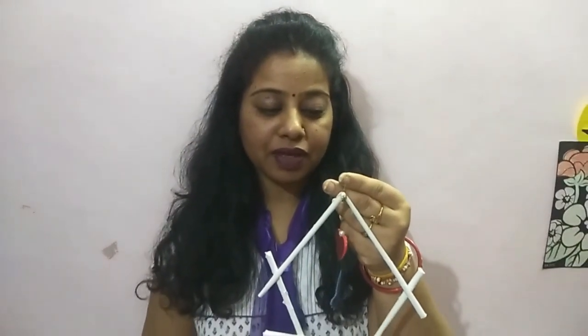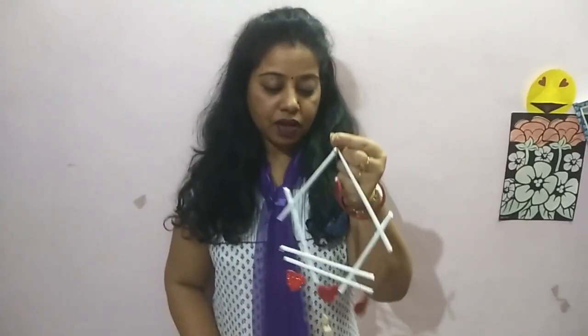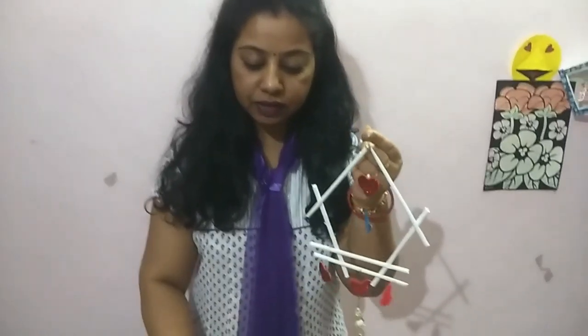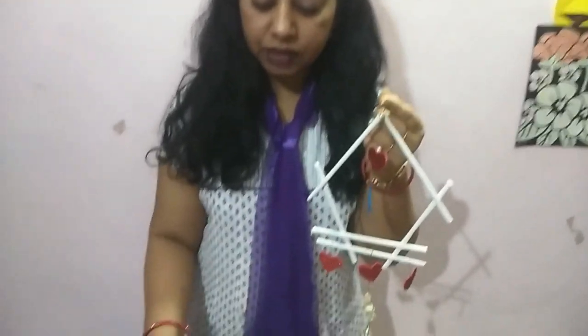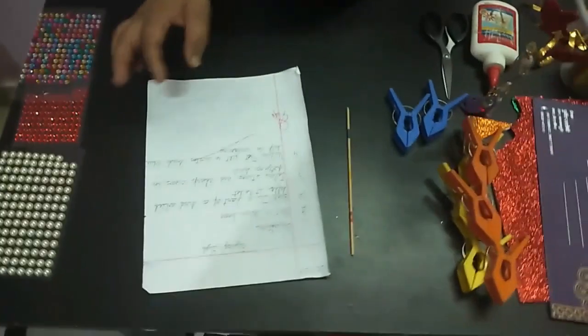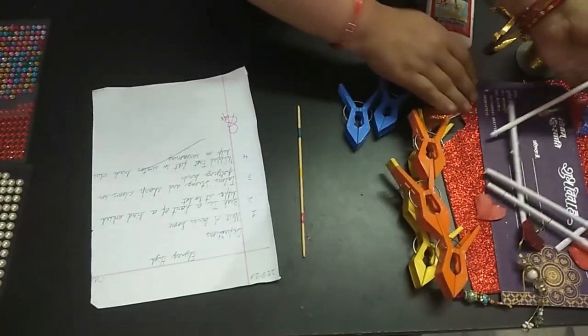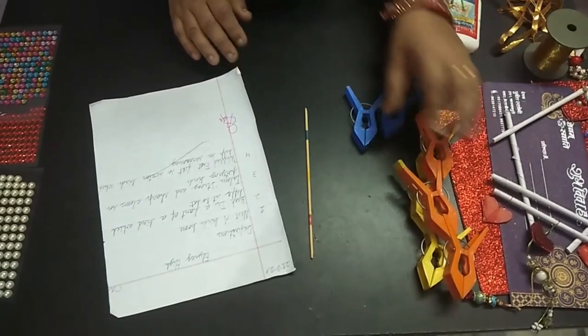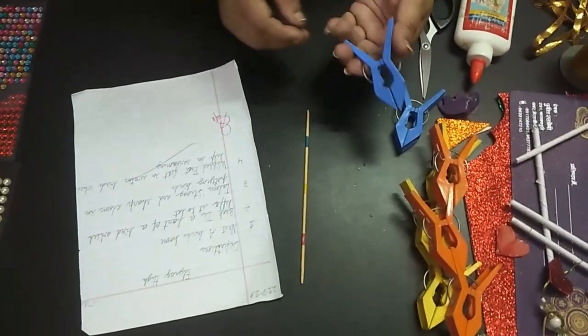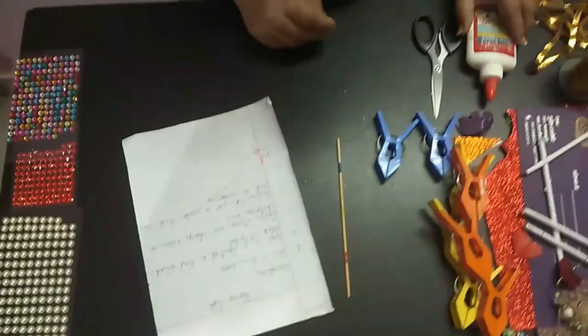Hello children, today you're going to make this beautiful wall hanging with Sangya Mom. So what I've taken: an interleaf sheet from an old notebook, glitter paper—you can use invitation card paper also—some cloth pins, glue.